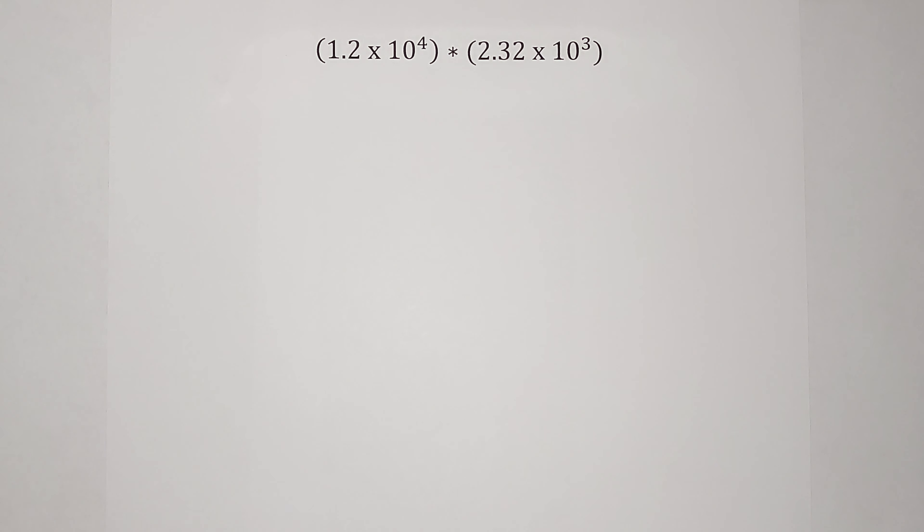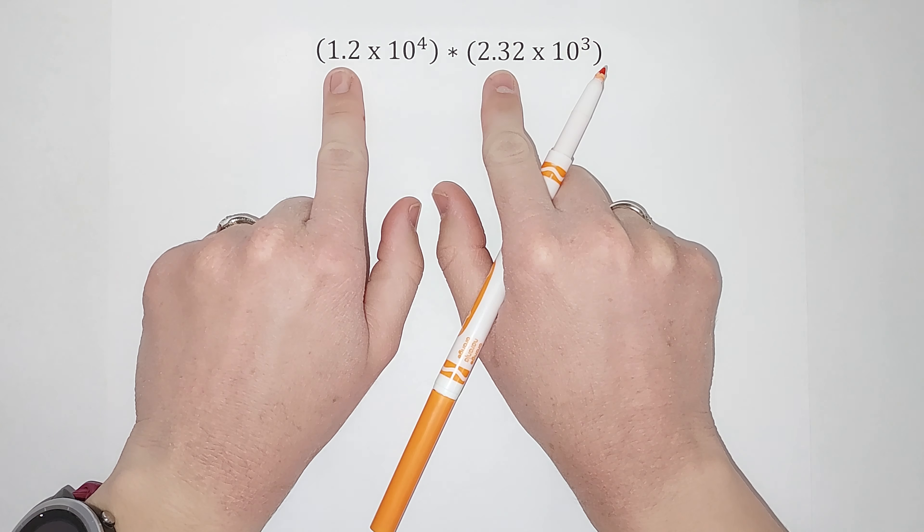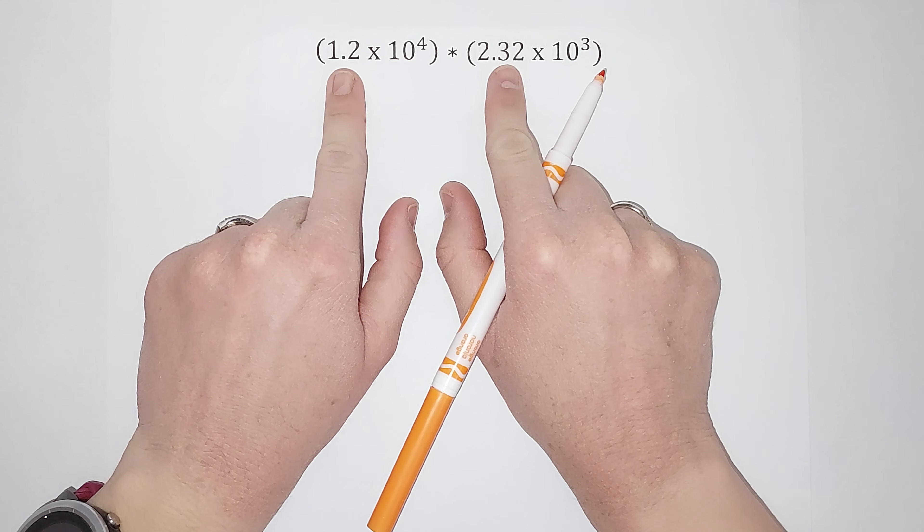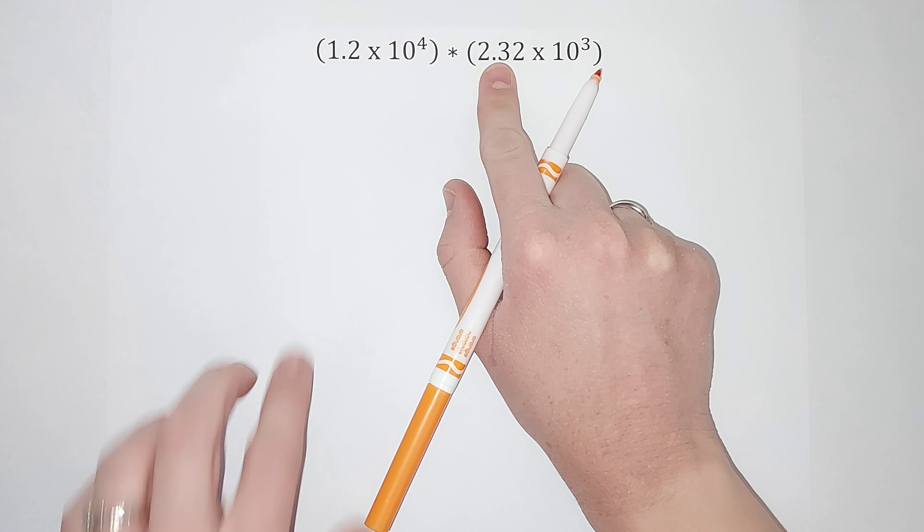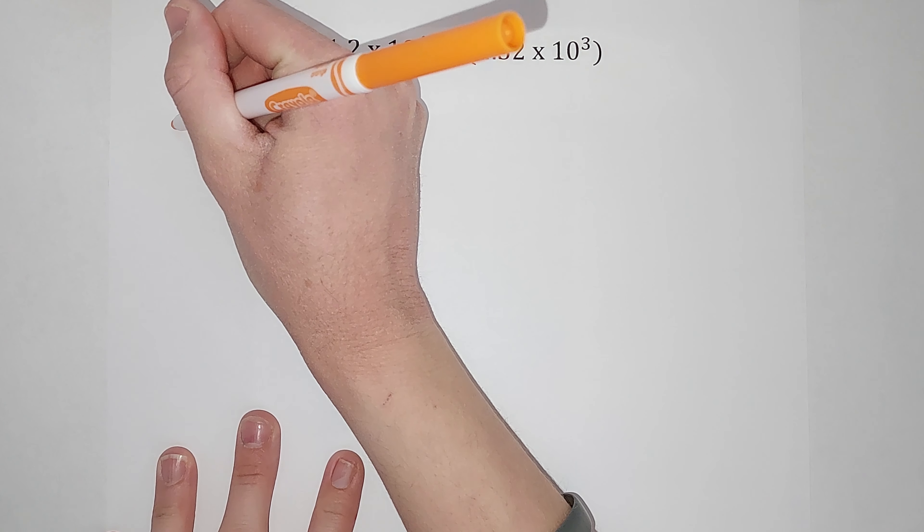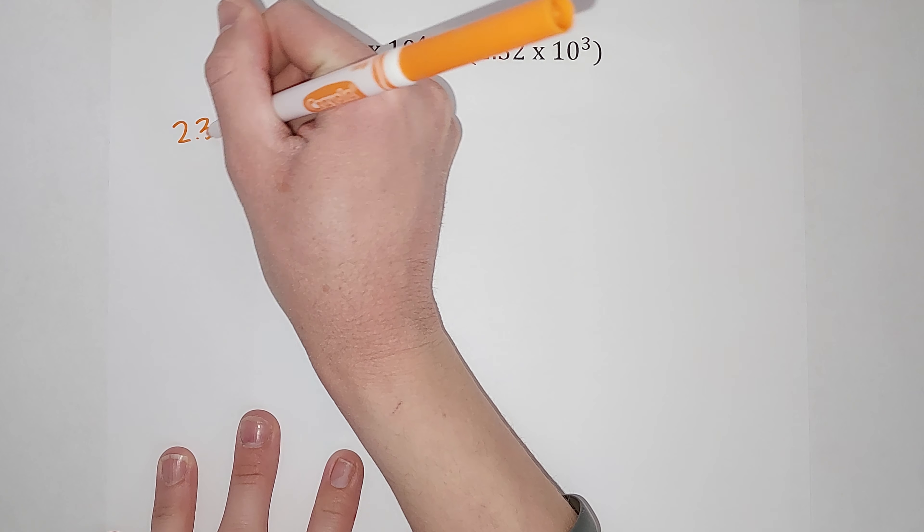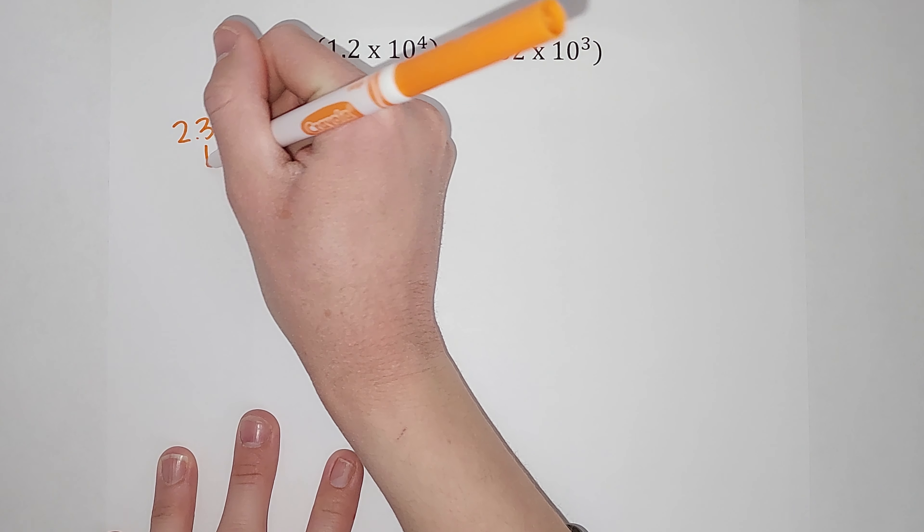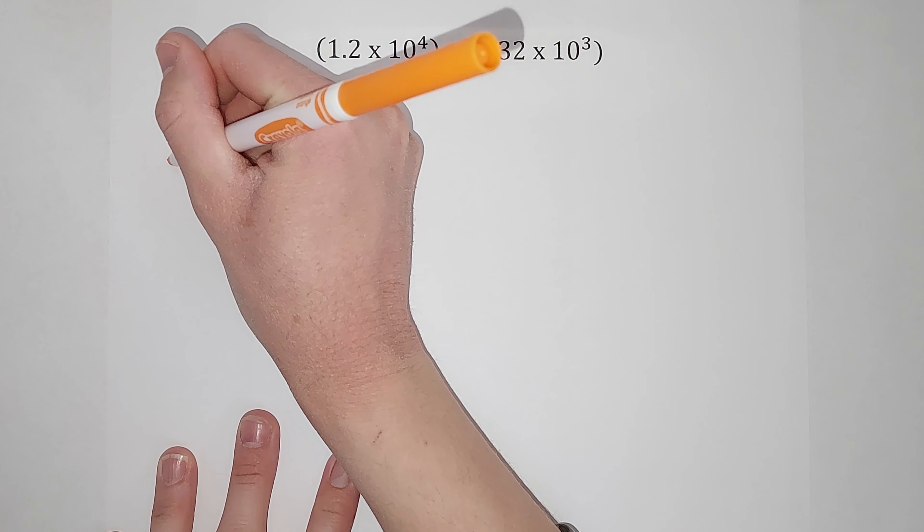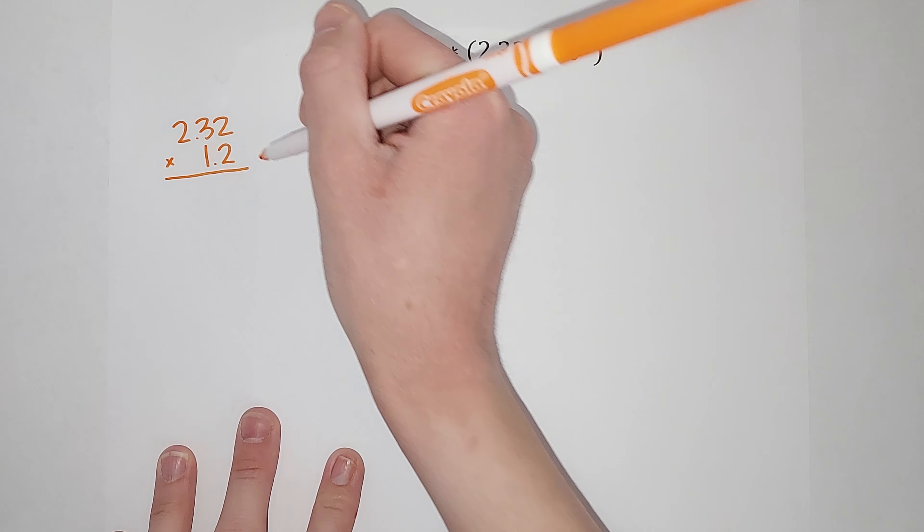So when I multiply these, what I do is I'm going to multiply these decimals. I'm going to take 2.32 and multiply it by 1.2. I'll also link a video in the corner if you need a refresher on multiplying decimals.